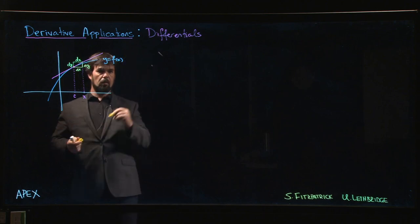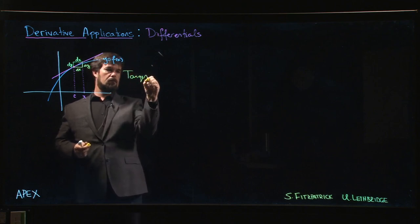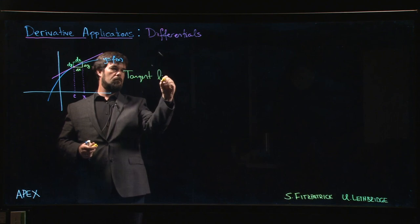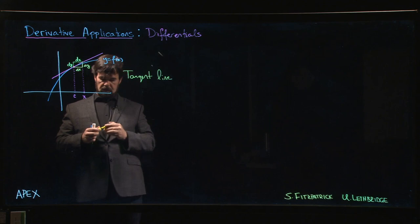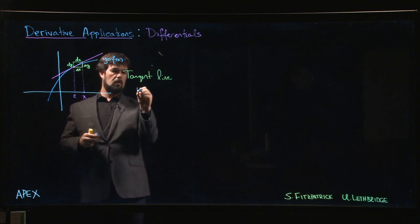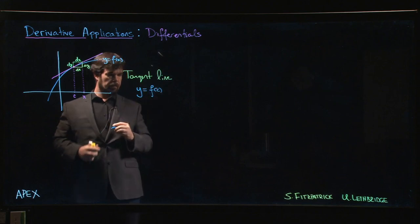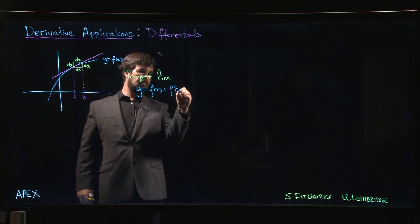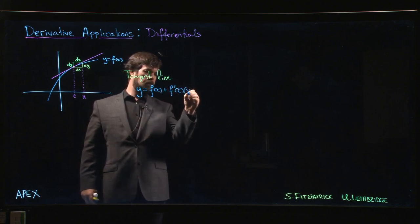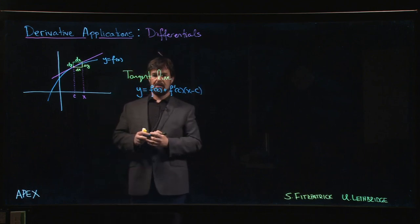We know how to write down the equation of a tangent line at this point. The tangent line looks like the following: y equals f of c plus f prime of c times x minus c. That's the equation for the tangent line.